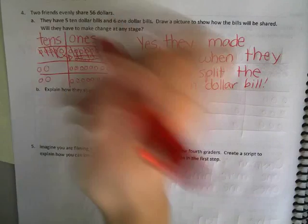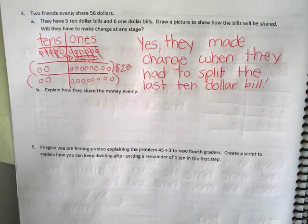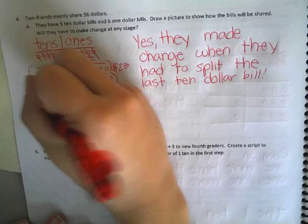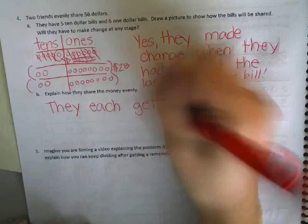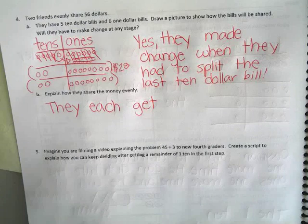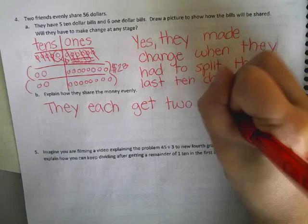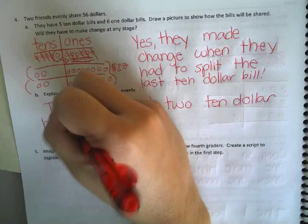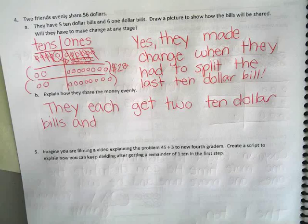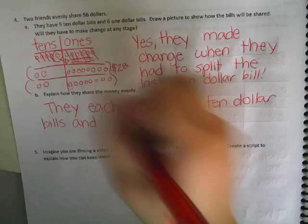Let's look at what they each get. They each get — let's talk about the tens first. They each get two $10 bills. That sounds even so far. And what else do they get? Eight $1 bills.